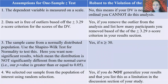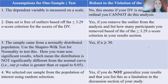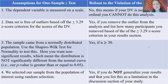Here is a table with all of the assumptions listed, including a 'robust to violation' column. When going through this yourself, I typically look at it in this order. First, check if your dependent variable is measured on a scale — if yes, move on. Next, check if your data set is free of outliers based on the plus or minus 3.29 z-score criterion. If none of your z-scores meet that threshold, you meet this assumption and move to the next one.